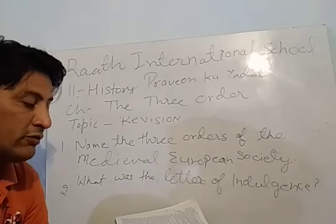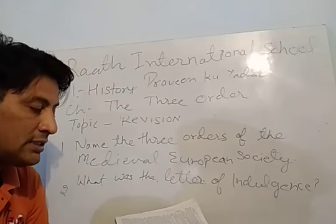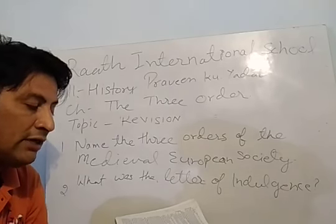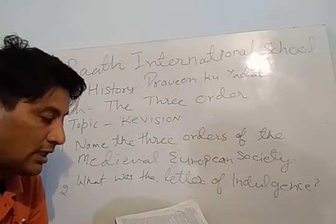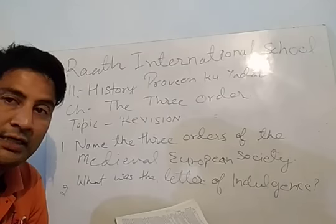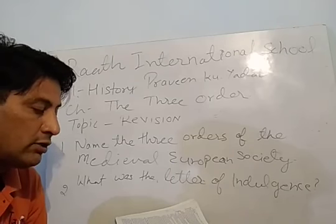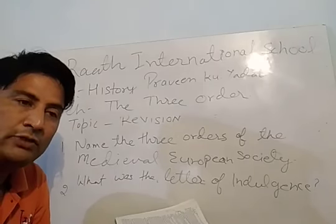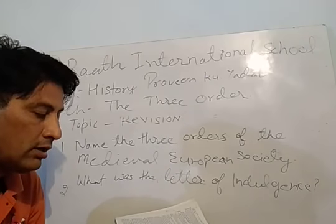With the expansion of trade in the 13th and 14th century, ships carrying goods from distant countries started arriving in European ports. Rats came along with ships and carried the infection of the bubonic plague. As trade centers, cities were the hardest hit. Close communities like monasteries and convents were also severely infected.